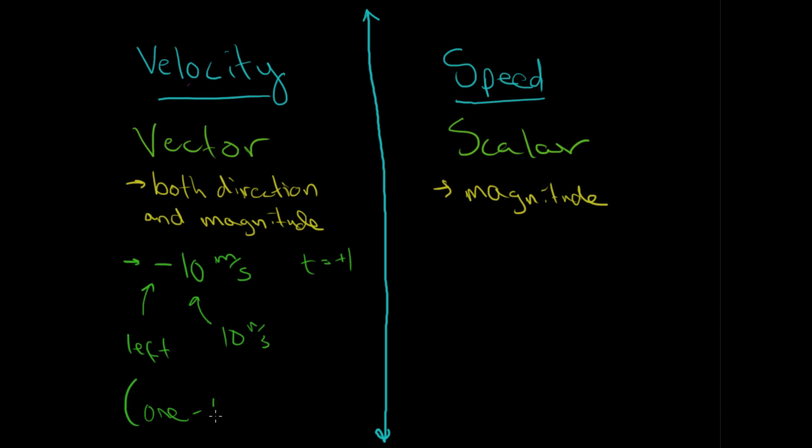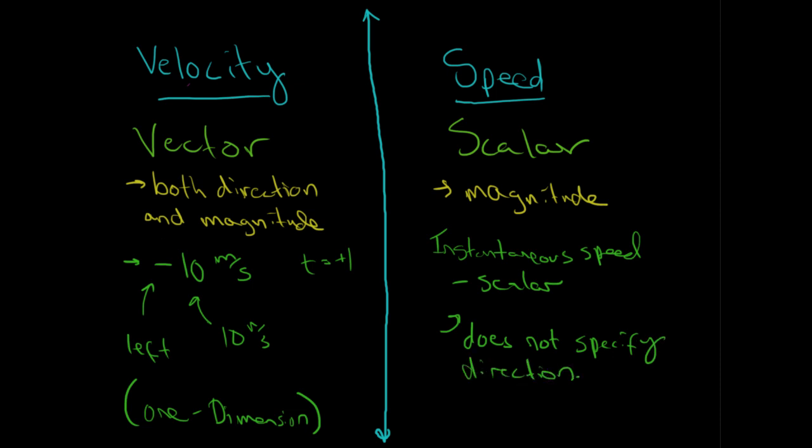Because remember, we're still talking about one dimension. So, since speed is a scalar quantity, then instantaneous speed is also a scalar quantity. This means it does not specify direction.